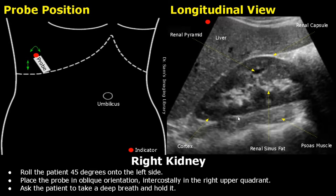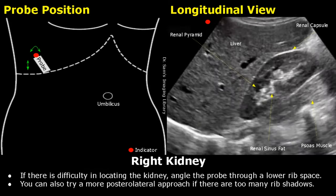Behind the kidney, we may sometimes see this muscle — this is the psoas muscle. If you find difficulty in locating the kidney, angle and move the probe through the rib space. You can rotate slightly anticlockwise to fit the rib space and remove rib shadows. You can move the probe more to the right if too many shadows are obscuring the kidney, and try a posterolateral approach.